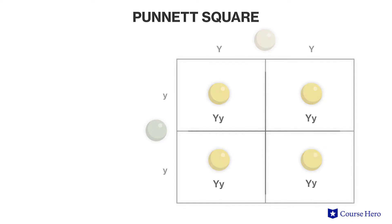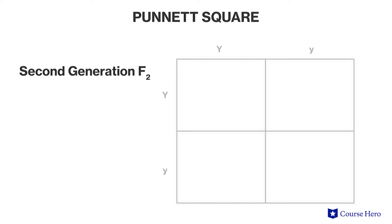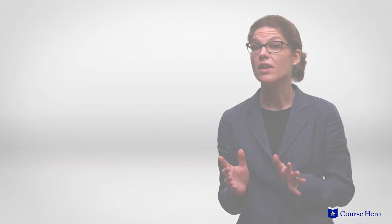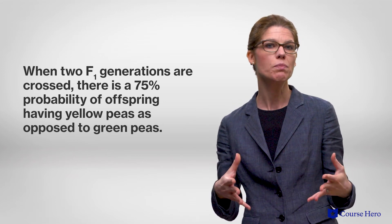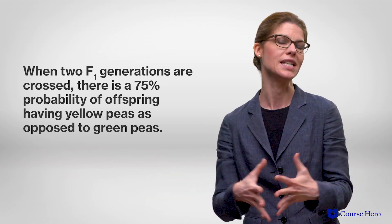The F1 can be crossed to get the second generation, or F2. And once again, a Punnett square can be used to predict the outcome of this cross. According to the Punnett square, when two F1 are crossed, any F2 offspring has a three-in-one chance, or a 75% probability of having yellow peas as opposed to green peas.